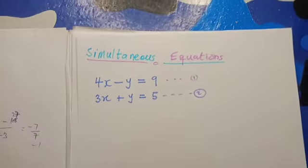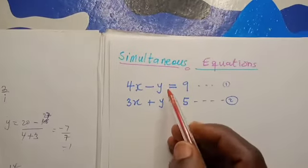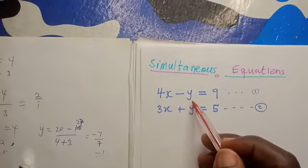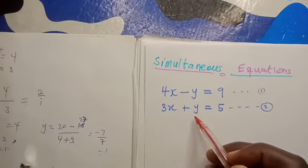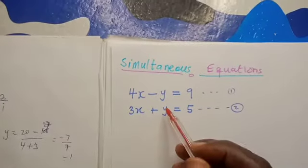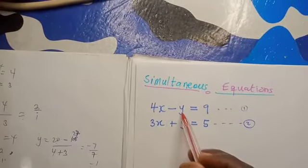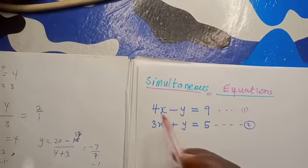Alright, let's solve this simultaneous equation where the sign for y is not the same. In the previous video, we saw that the sign for y is the same (plus, plus), and that of x is the same.